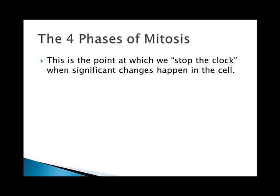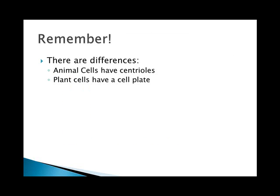Now we're going to cover the four phases of mitosis. We stop the clock when significant changes happen in the cell — we actually do this under a microscope by adding a poison called colchicine, which causes the cell to immediately stop whatever it's doing, freezing chromosome movement in time so you can see them. Remember the three differences between cell types: animal cells have centrioles involved in moving the chromosomes, and plant cells don't — but the chromosomes still move. Plant cells have a cell plate and animal cells don't. I'm going to show you plant cells because they're easier to see, but it looks very similar in animal cells.